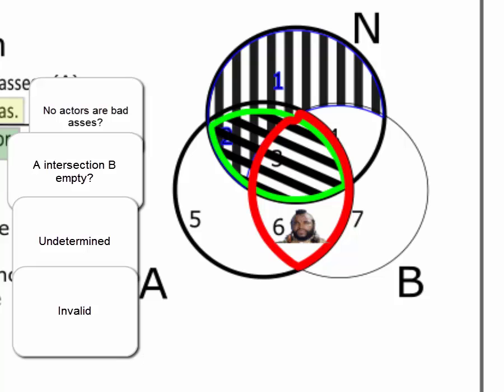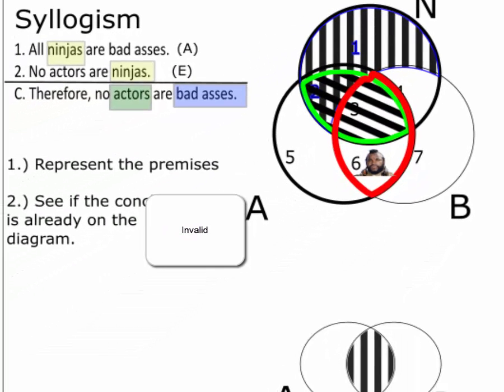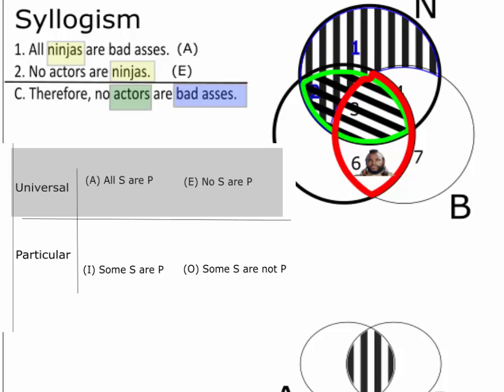If any possibility for the conclusion to be false remains after representing the premises, then the argument is invalid. So that's how you diagram a categorical syllogism involving only A statements and E statements. In other words, the universal statements. When you have a syllogism that involves I statements and O statements, the particular statements, a complication arises. So we'll turn to that in the next video.